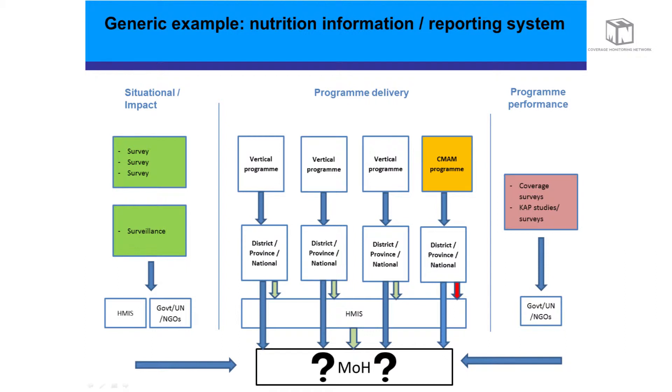On the program delivery side, you have your vertical programs often, and quite often CMAM stands apart from those, feeding up their various singular channels to the district, province, and national levels. Some of this is captured in the HMIS, but you'll notice the red arrow for CMAM — very few indicators are normally included in a national HMIS. On the program performance side, you have coverage survey data if that exists, and your knowledge, attitudes, and practices surveys feeding up again. The big question — and the real point of this slide — is how is all this data coming together at a central level, and what are we doing to support this?